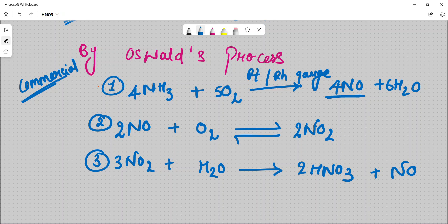After NO, we will react with oxygen, so NO2 will get. And NO2 will react with water, so HNO3 will get. This is our 3-step process complete.